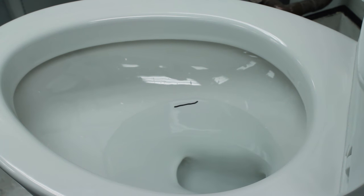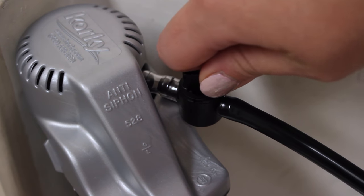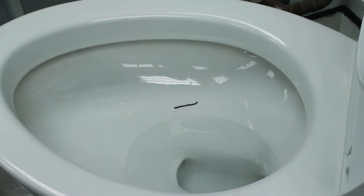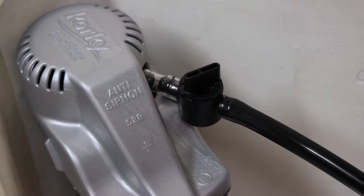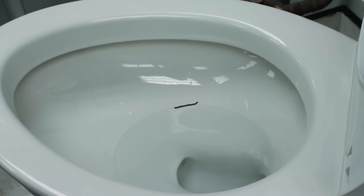If the bowl water level reaches the mark before the tank is finished filling, turn the dial counterclockwise to reduce flow. If the bowl water level is below the mark once the tank is done filling, turn the dial clockwise to increase flow. Repeat this step until the water level reaches the pencil mark at the same time the tank finishes filling.